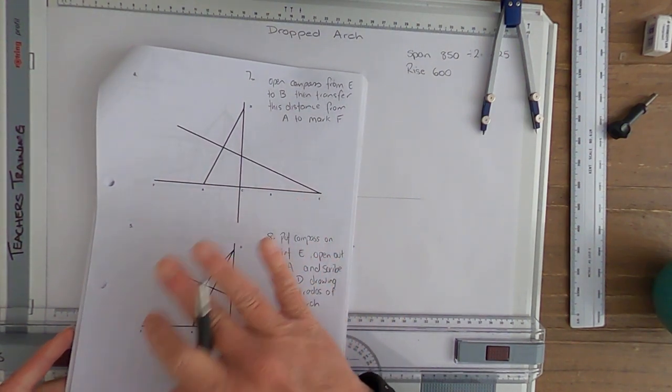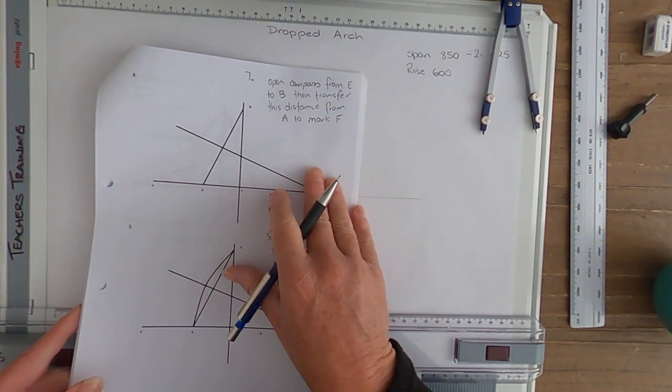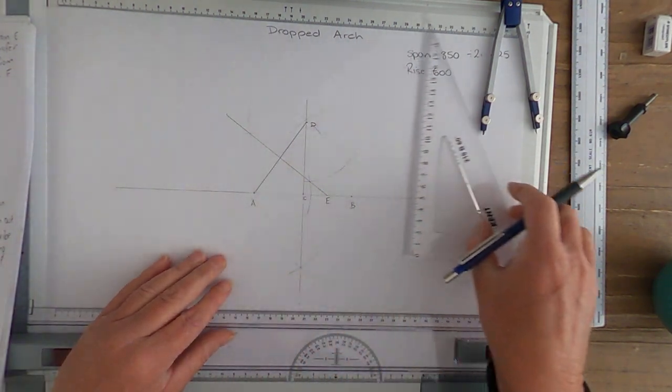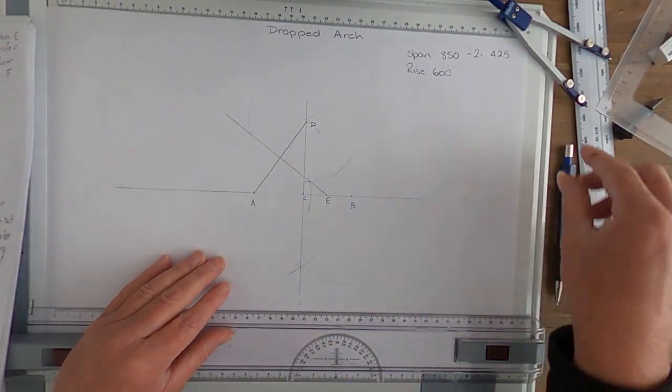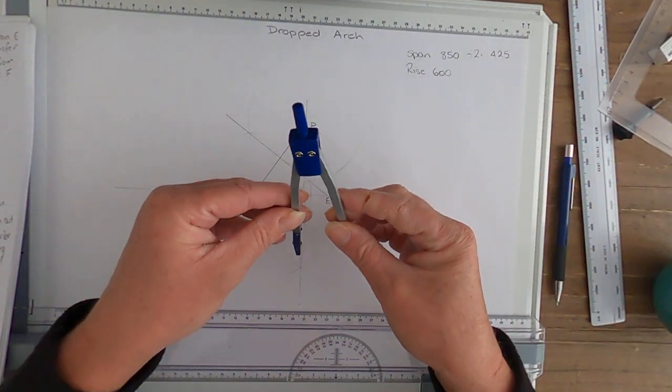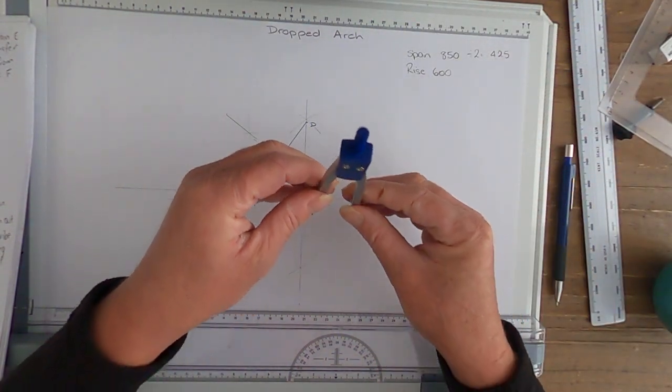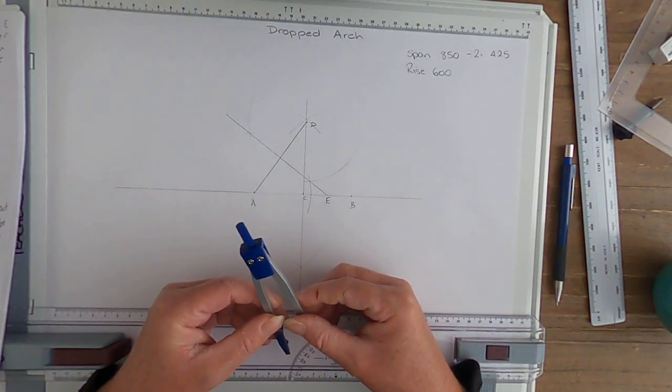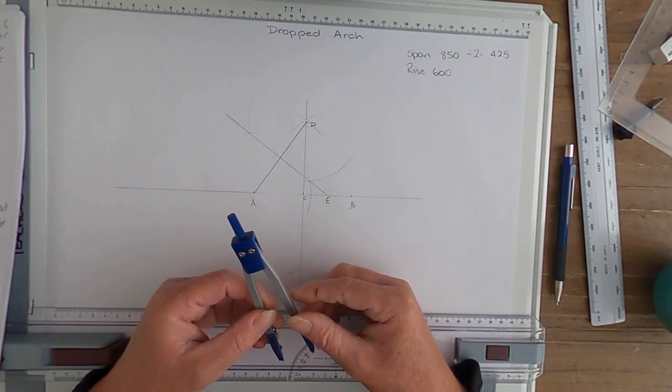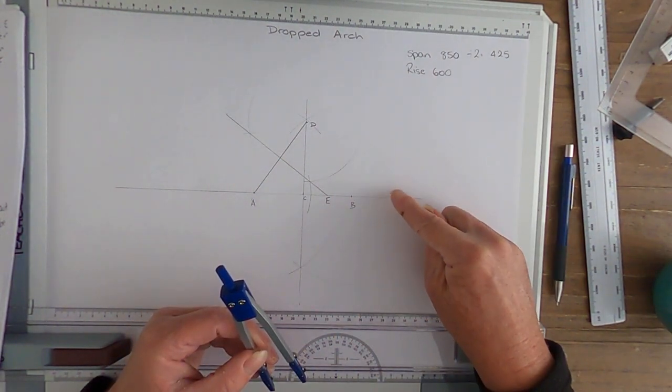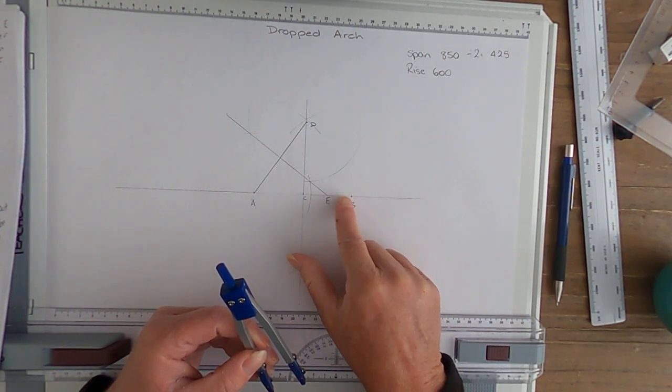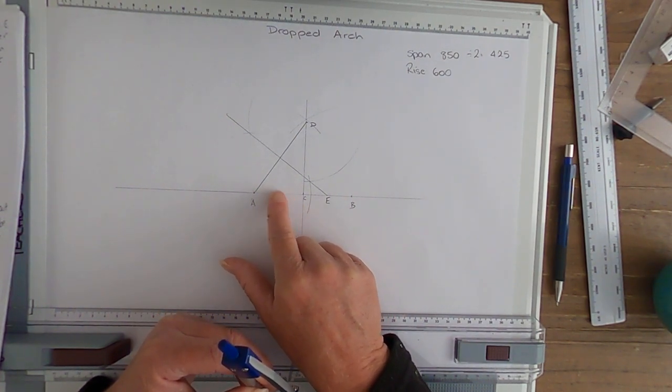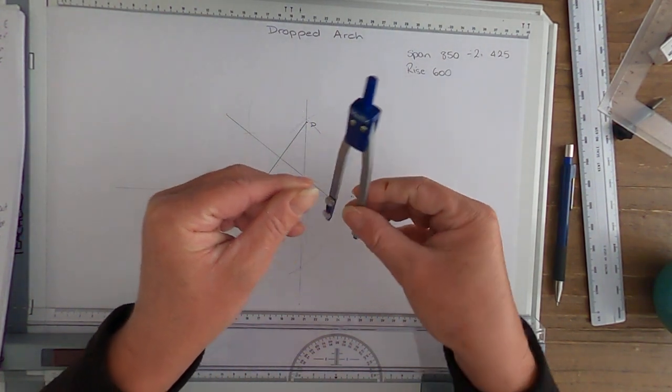So the next step we have is we open up our compass on E to B. Notice too that when we did the Lancet one, the E was right on the other side of B, so we come internally. So we're going to transfer this to where A is internally, not on the external like we've done. That's the only difference.